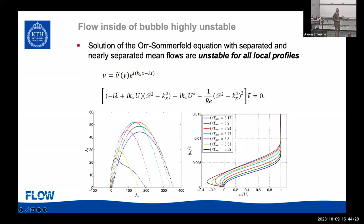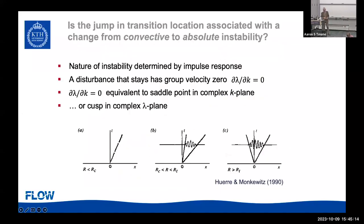We look at the Orr-Sommerfeld solution — the same as for Poiseuille flow — and look at profiles right at the maximum of the separation bubble. Even without full separation, all of these profiles are highly unstable. So you can't really use local stability alone to determine what specific change is happening. We then turned to asking whether this has anything to do with a change from convective to absolute instability.